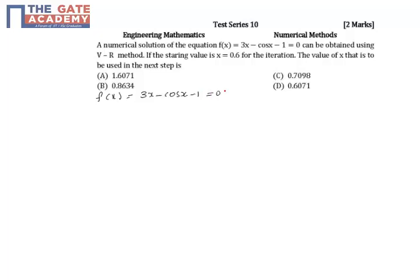Using Newton's Raphson method with the initial guess value of x0 is equal to 0.6, you have to find out the value of x1, the first step.